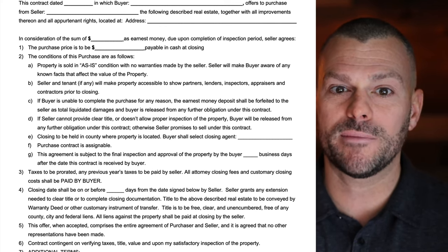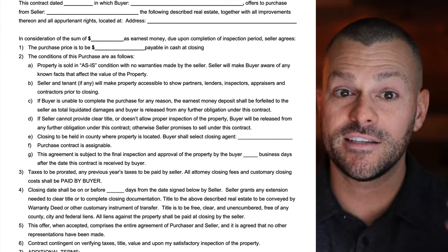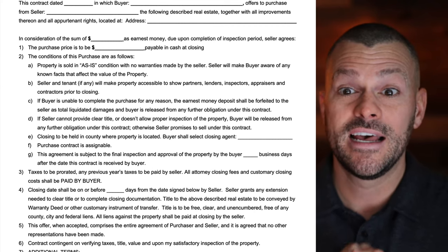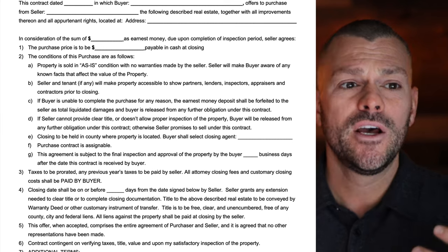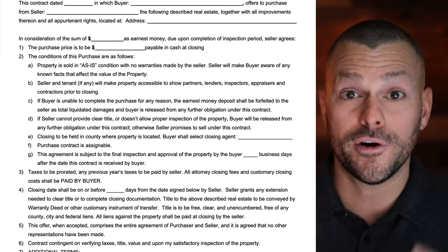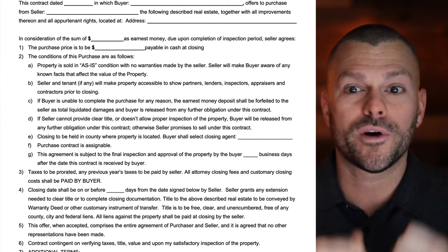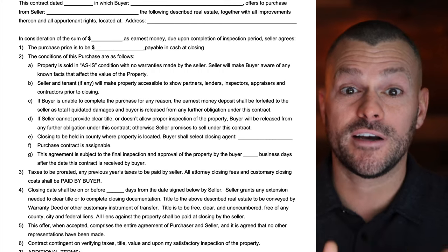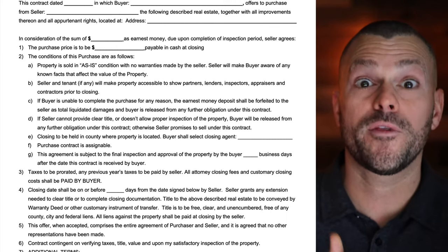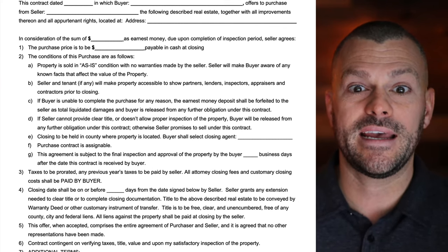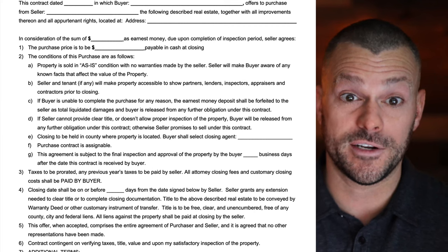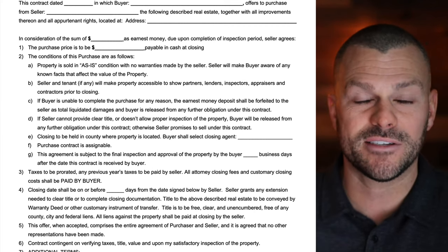Condition C: if the buyer is unable to complete the purchase for any reason, the earnest money deposit shall be forfeited to the seller as total liquidated damages, and the buyer is released from any further obligation under this contract. This is important because in the event we can't close on the property — or our buyer stands us up when wholesaling — the earnest money we deposited, hopefully $10 or $100, we forfeit. That covers us of any damages and prevents the seller from trying to sue us or force performance.